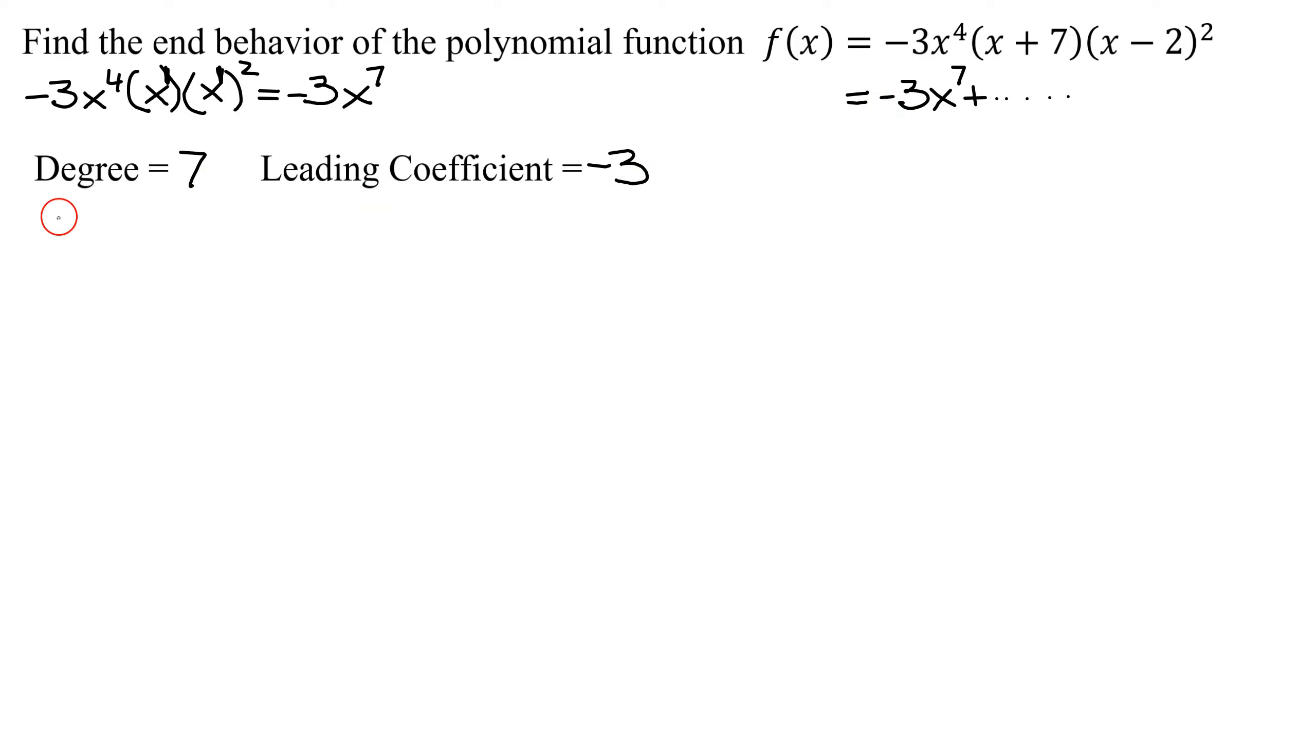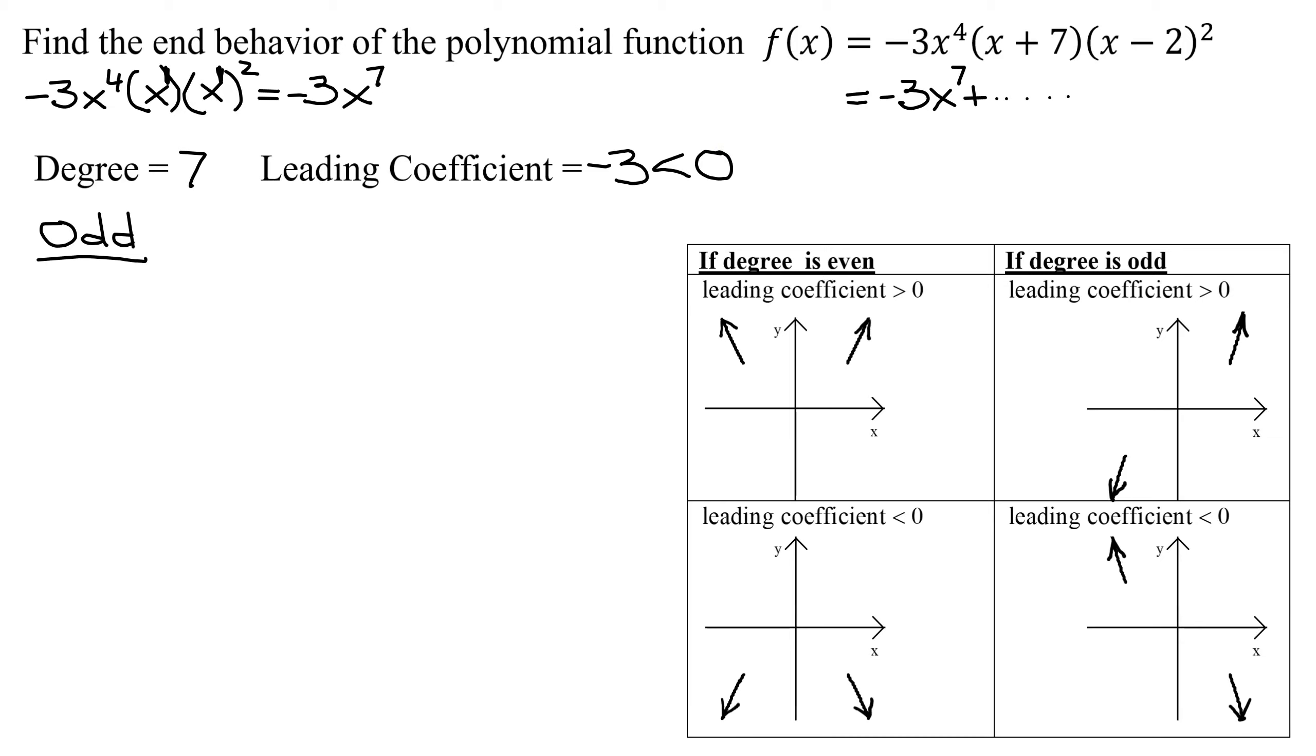So I know my degree is an odd number, and my leading coefficient is negative. It's less than 0. So let's look at a summary for end behavior of polynomial functions.